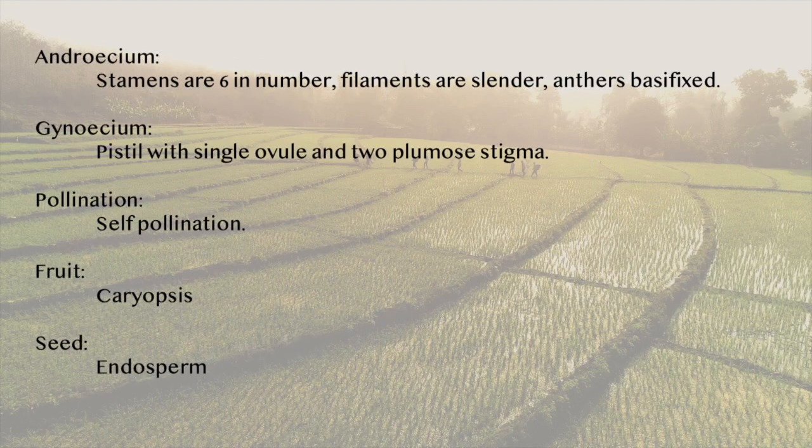The androecium has six stamens and the filaments are slender. The anthers are basifixed. The gynoecium has a single ovule pistil with two plumose stigmas. Self-pollination occurs in rice. The fruit is caryopsis and the seed is endosperm.